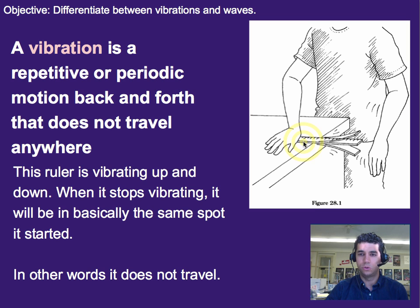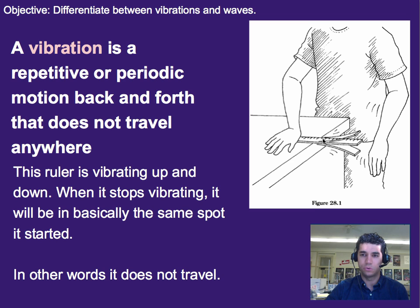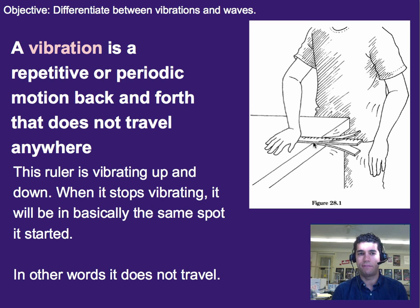If you hold the ruler down on one end and then you pluck the other end, what's going to happen is it will make a sound, it will vibrate, but the ruler doesn't go anywhere. The end is traveling up and down, but the ruler itself doesn't end up across the room. So it basically stays in the same spot that it started. This is what we mean by it does not travel, and this is an example of a vibration — the ruler is vibrating.